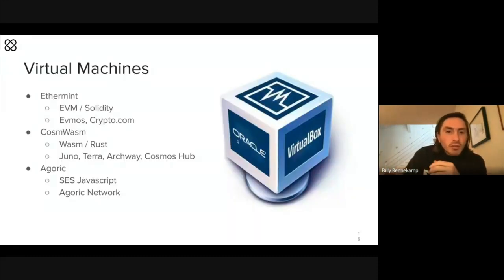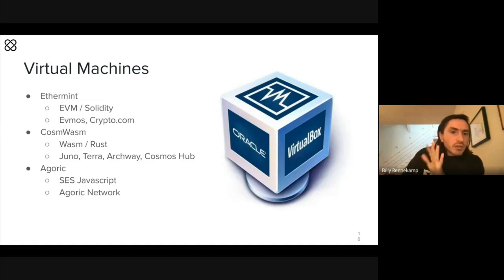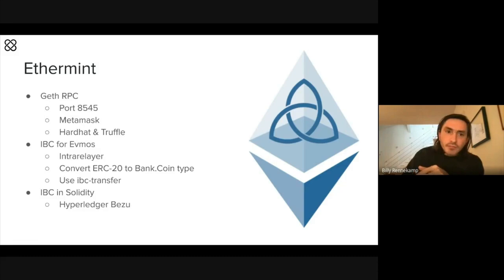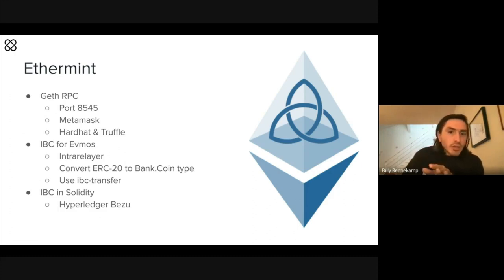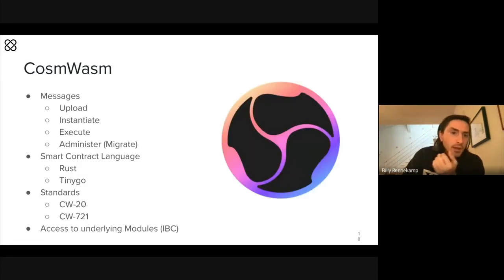Virtual machines: these are like having the EVM inside of a blockchain. There are different versions — some written in Rust called CosmWasm, some in JavaScript called Goric. Ethermint is the Ethereum virtual machine module, live on networks like Evmos. It looks exactly the same as normal Ethereum, except it's run by Proof of Stake inside a Cosmos SDK instance.